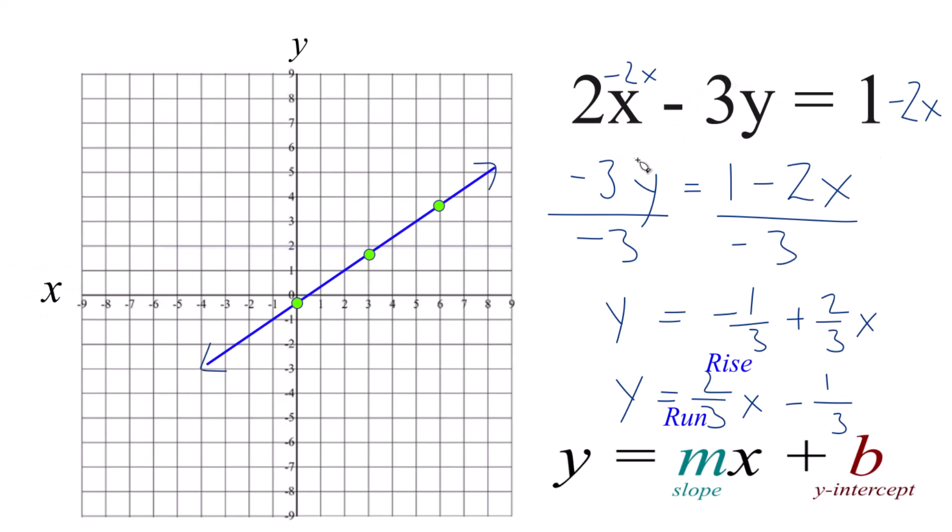Let's put a line through it. And that's the graph for 2x minus 3y equals 1. Again, if you used a table of values, you'd get the same graph.